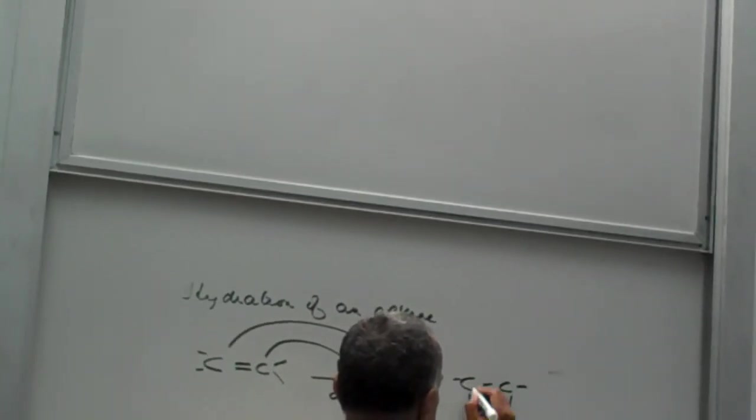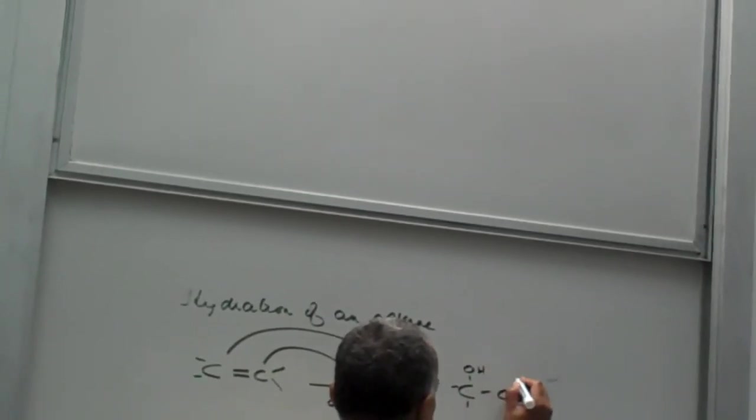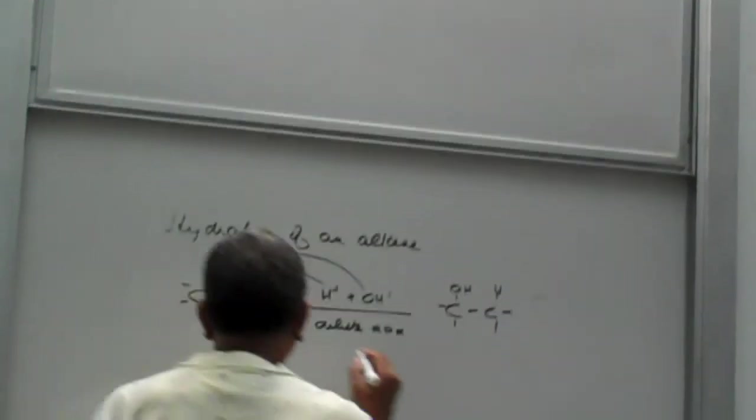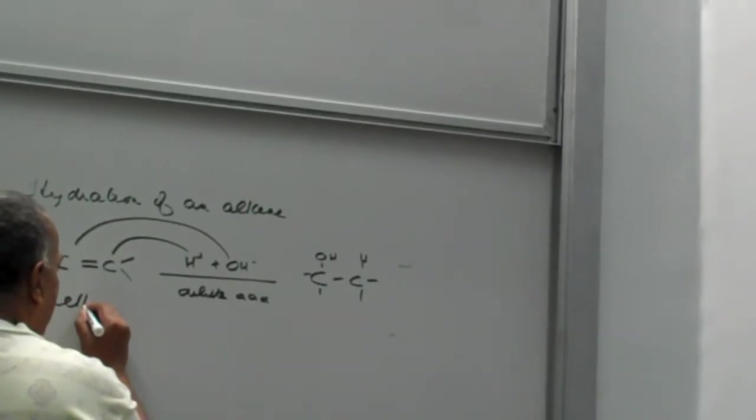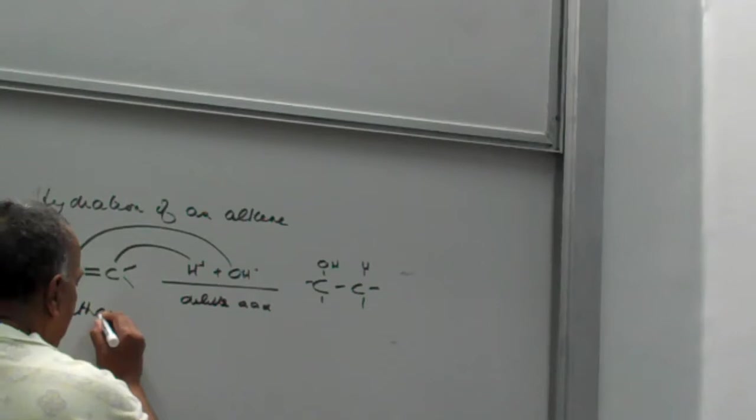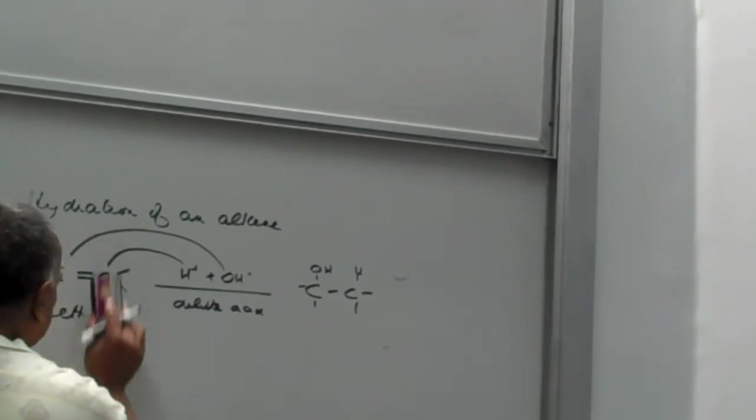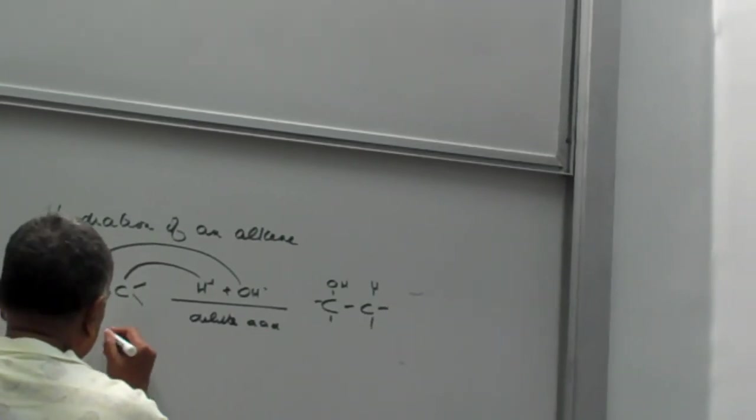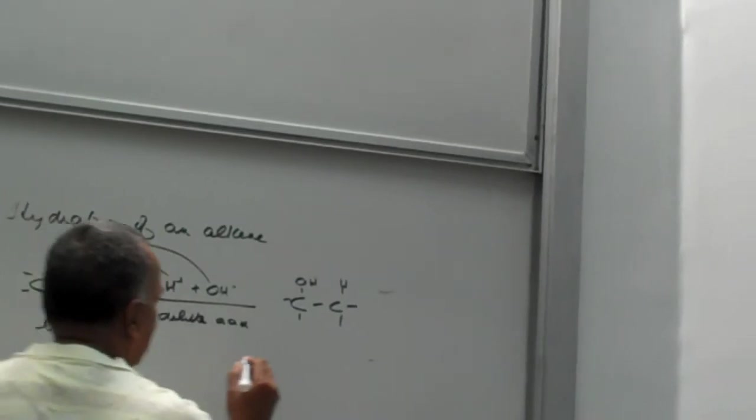So basically here, if we start off with ethene, we finish up with ethanol.